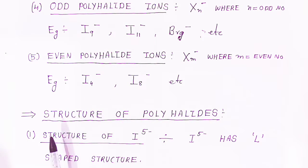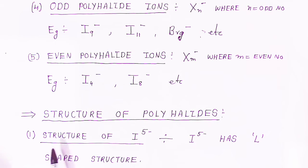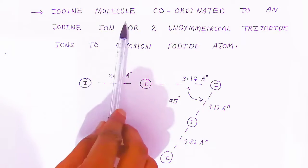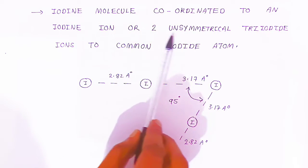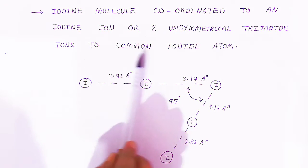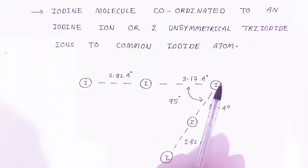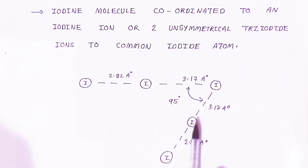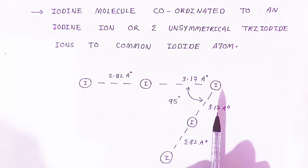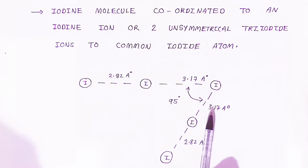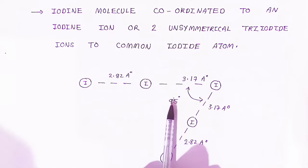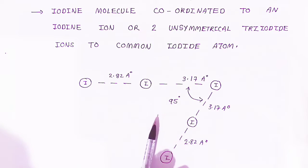Now we look at the structure of polyhalide ions. The I5- ion has an L-shaped structure. Two unsymmetrical triiodide ions are coordinated to a common iodine atom. The I-I bond lengths are 2.8 Å and 3.17 Å, with another bond of 2.82 Å. The I-I-I bond angle is 95 degrees, which is why it is called an L-shaped structure.